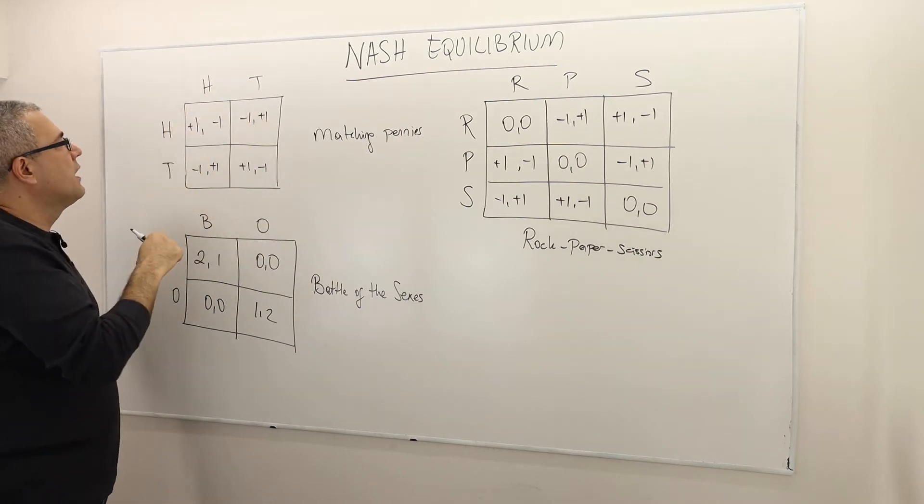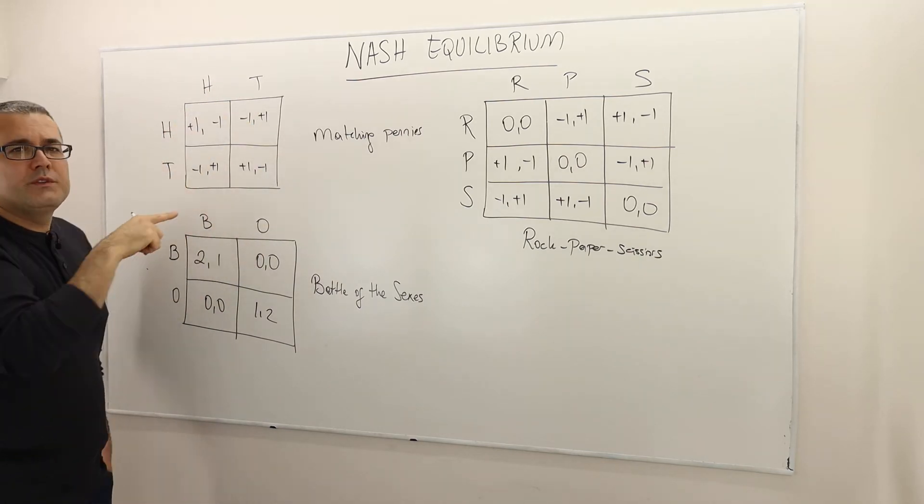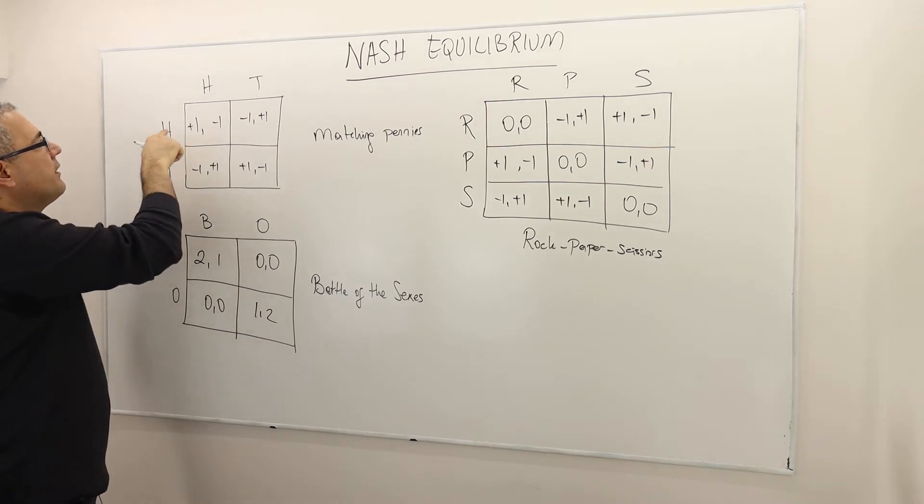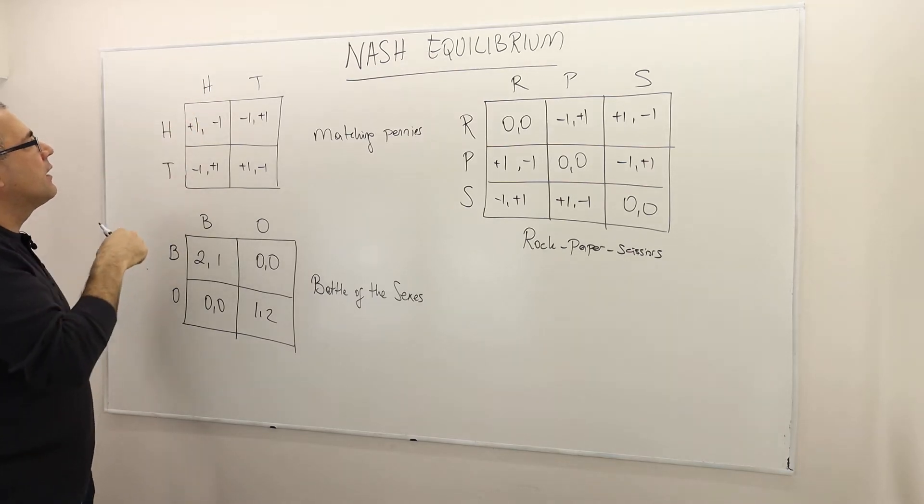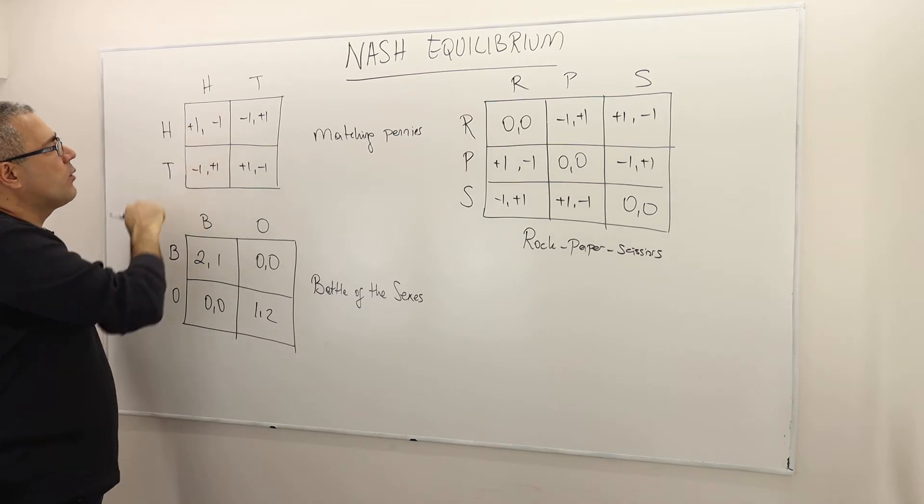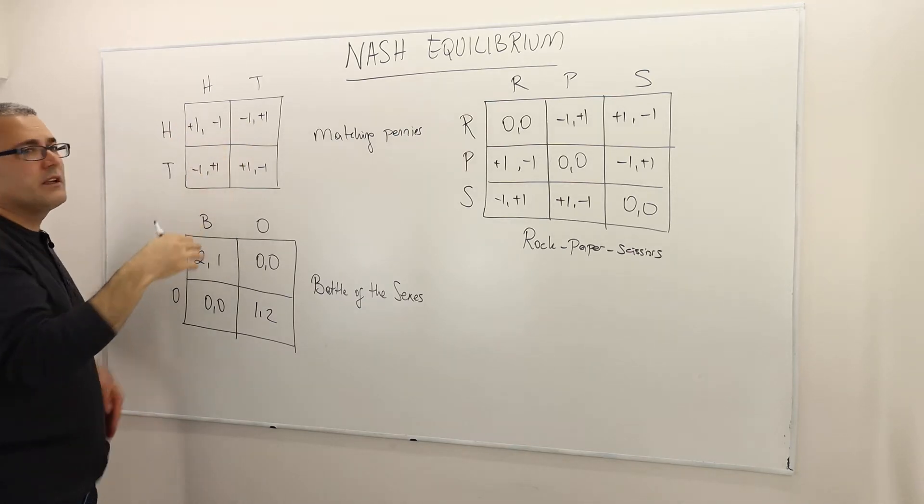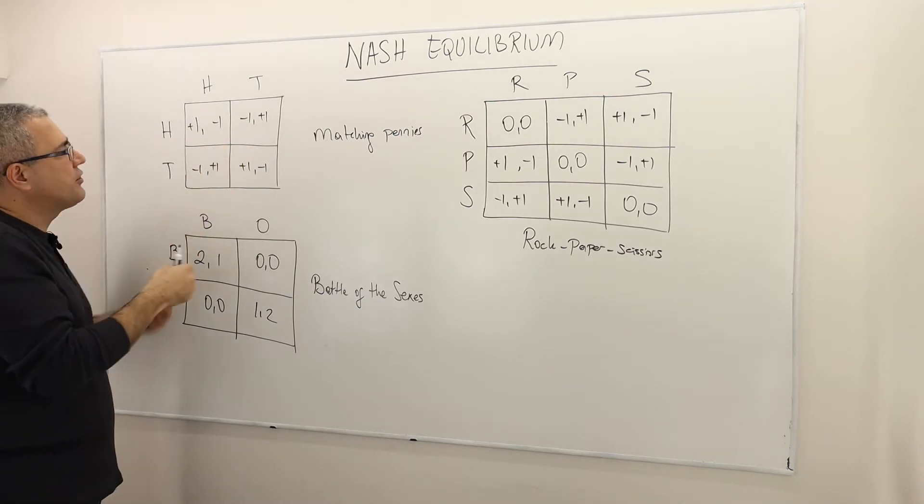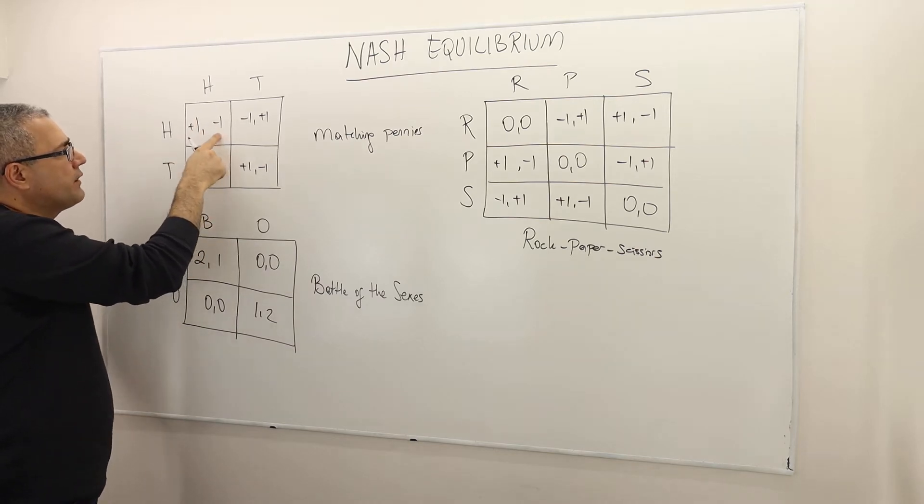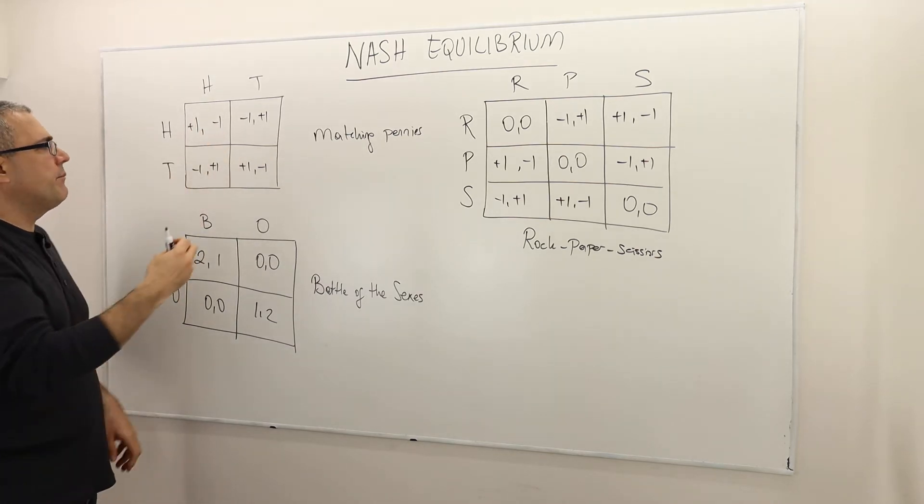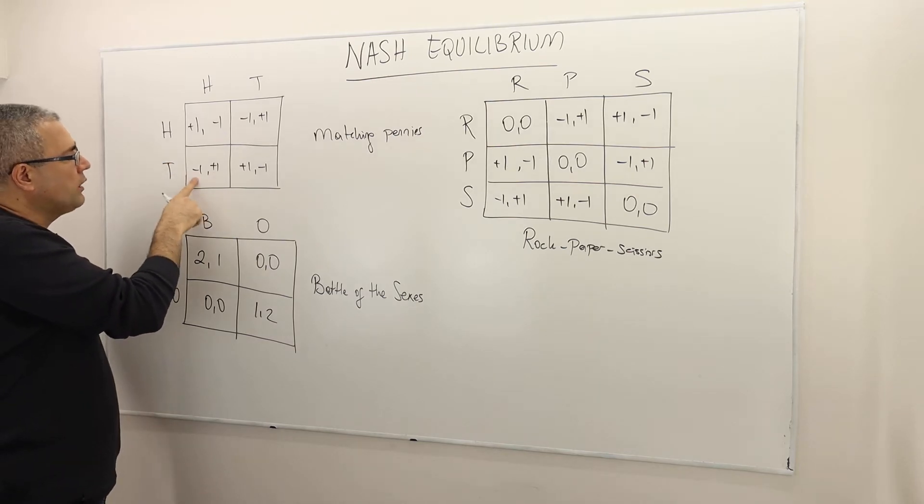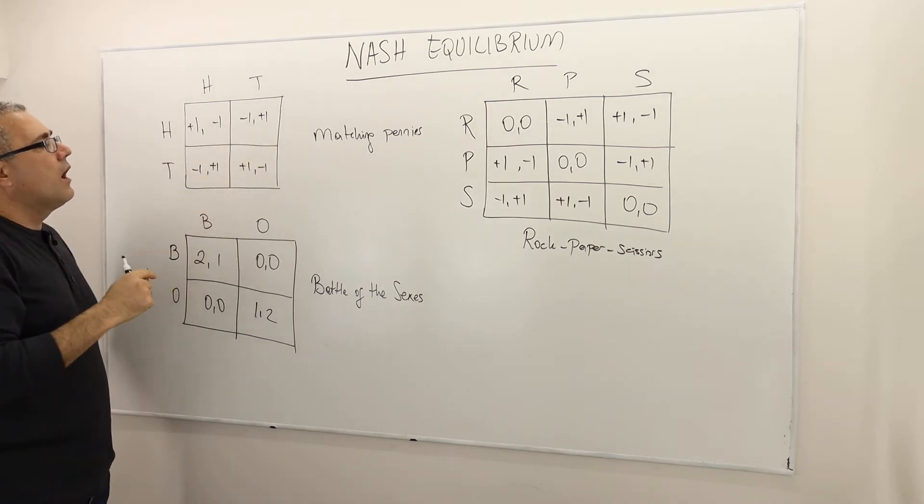So the matching pennies, well, there are two players. So they're choosing either head or tail. And if they both choose head, the player, or if they both choose tail, meaning if their choices match, well, then player one wins, player two loses. But if their choices do not match, well, this time player one loses, player two wins.